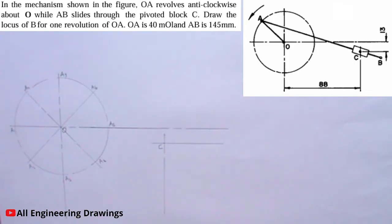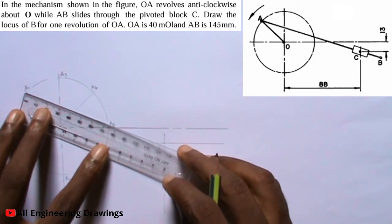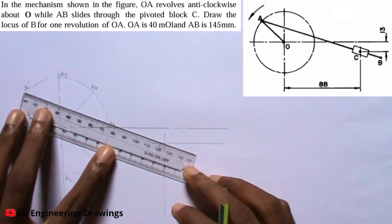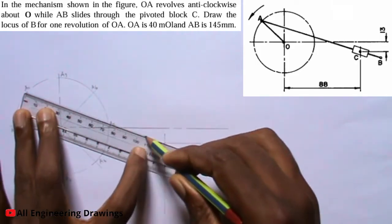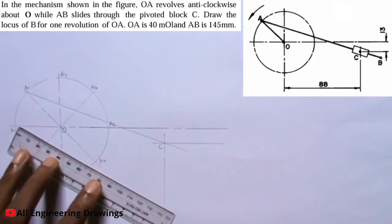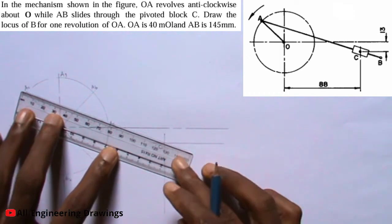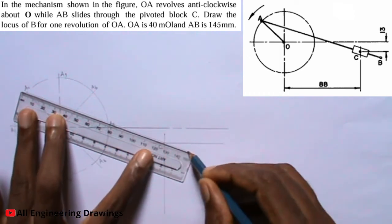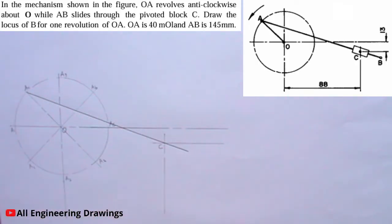From the question, line AB is 145mm. So I will draw a line from point A0 passing through point C. The line should be 145mm. I will label the end of the line B0.